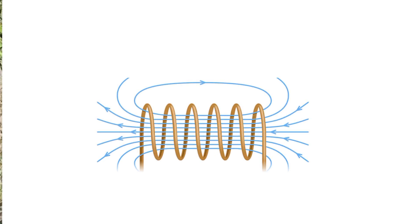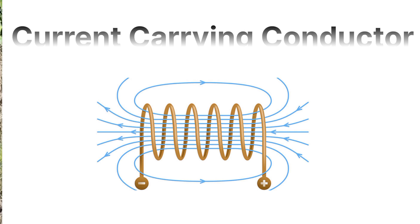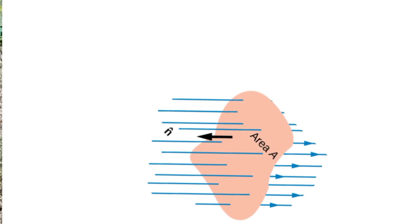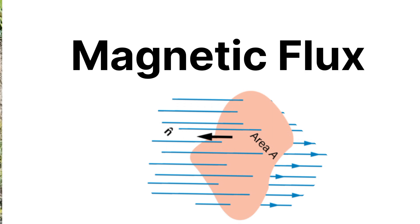We all know that any current-carrying conductor can produce a magnetic field. The total number of magnetic field lines passing through a given certain area is called the magnetic flux. Remember: whenever the number of magnetic field lines passes through a certain area, that is called the magnetic flux. So magnetic flux means the number of magnetic field lines passing through a certain area.